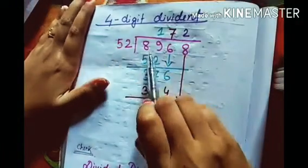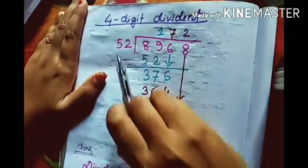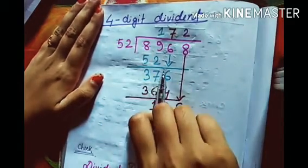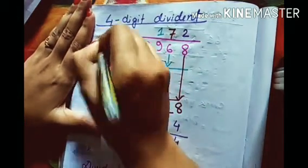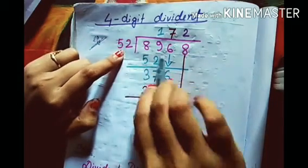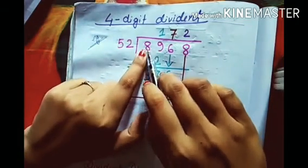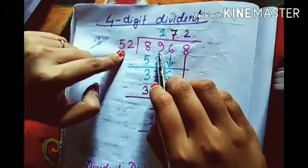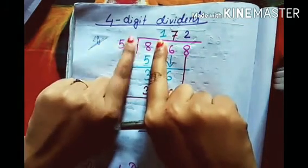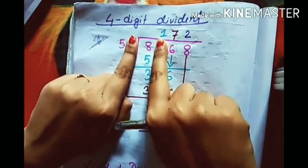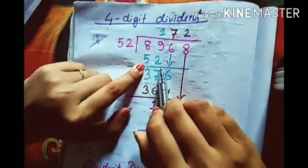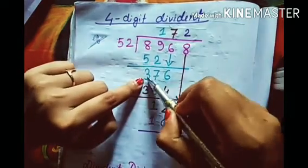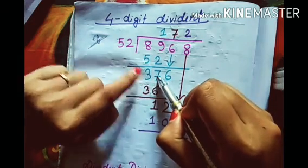Now I will show you with a four-digit dividend. We have 8968 divided by 52 - this is also from your exercise. Here we first try with two digits: 89 is greater than 52, so we can consider this two-digit number. Covering the ones places, we get 5 and 8 - 5 ones are 5. So 52 times 1 equals 52. After subtracting, we get 37, which is smaller than 52.